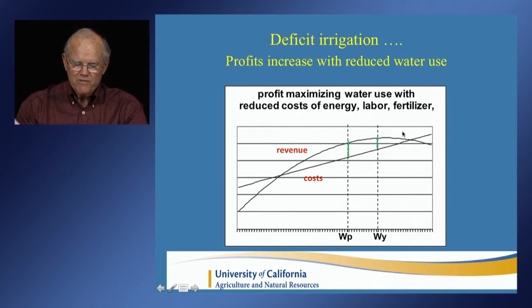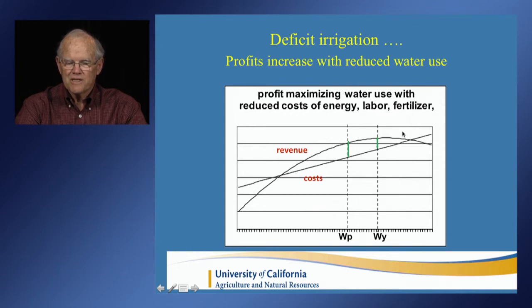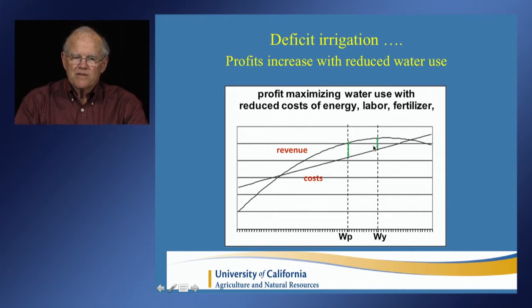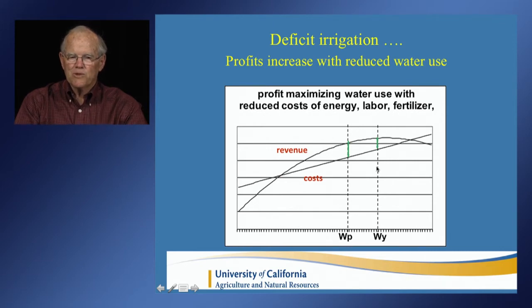Now suppose we move to the left a bit — reducing water use from the nominal full irrigation requirement. Initially those curves spread, and you find that when you consider the reduction in costs of energy, labor, maintenance, fertilizer, and so on, the profit is actually increasing. It may not increase a lot, but it is increasing as you go a bit to the left. This is what we mean by deficit irrigation. The profit increase might be 5, 10, or 15 percent. But we also have saved water, which can presumably be used somewhere else at some value — and this is the most important part of deficit irrigation.